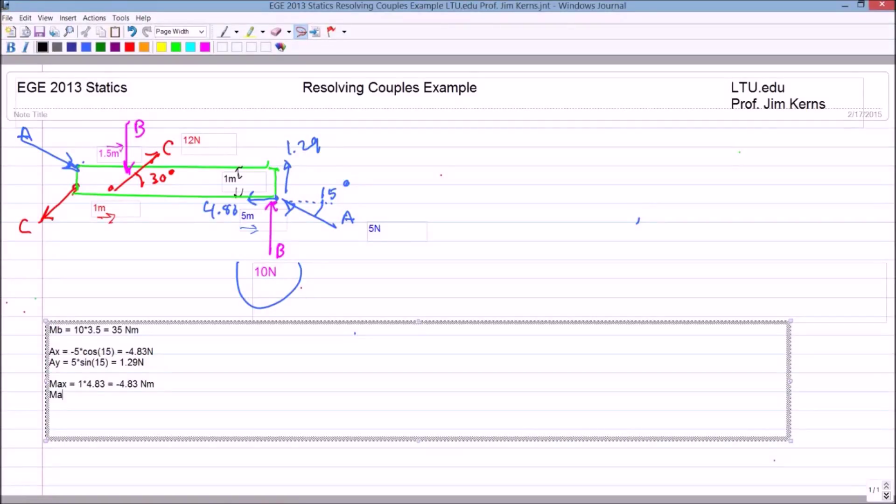And MAY in the Y direction equals, we have a distance of five meters one into the other, five times the magnitude of 1.29 equals 6.45.